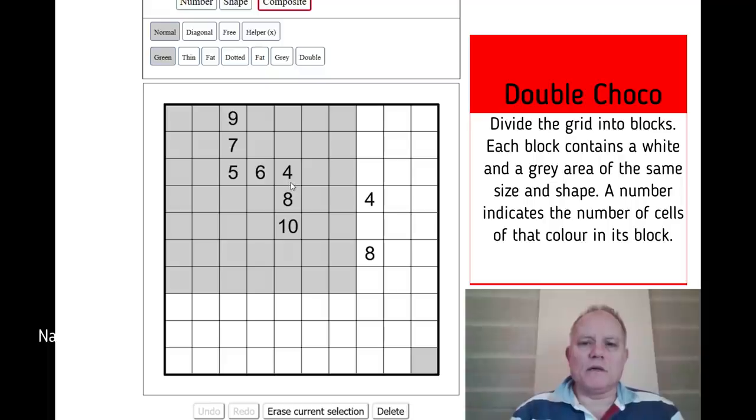One 7 is 14, that's 68. One 6, that's 12, that's 80. One 5, that's 10, that's 90. One 4, that takes us to 98. And then this one shape takes us to 100. So apart from the one shape in the corner, every shape has a number in it.